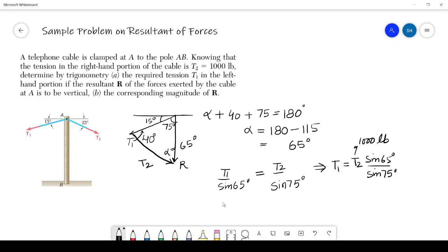Similarly we can write for R. So R upon, so R divided by sine of 40, and this will be equals to T1 upon sine of 65, or you can take T2 also.